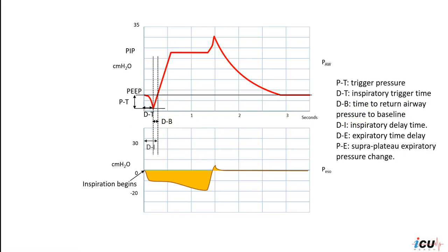And now we have a total time of delay that is from the initiation of patient's efforts here till the time to reach that PEEP level again. We call it inspiratory delay time. So this is the inspiratory delay time from the initiation of patient's effort till the time of reaching the PEEP level again.